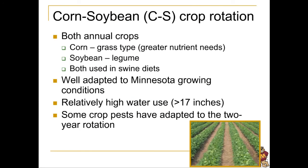Both of these crops are annuals, meaning they're planted and harvested in the same year. Well adapted to the Minnesota climate, corn and soybeans need lots of water. These crops work well together because soybeans leave some nitrogen behind to be used by next year's corn crop.